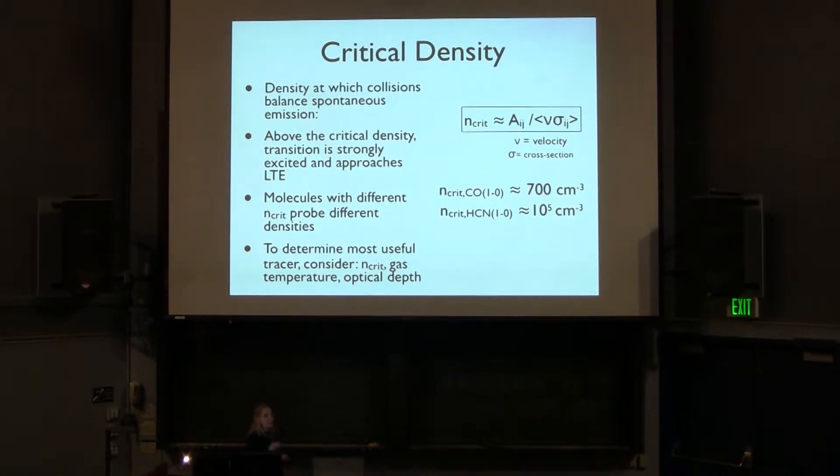However, once you get to this critical density, now collisions begin to regulate the process of molecular excitation. That means you approach this LTE when you have the gas coming into equilibrium, and really now it's the collisions that are exciting it and the dominant thing that determines the excitations is the gas temperature. So molecules with different critical densities can then be used to probe different densities of gas. For example, n_crit for CO is about 700 particles per centimeter cubed. HCN, by comparison, has a critical density of about 10 to the 5.